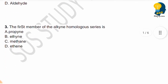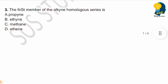Next question: The first member of the alkyne homologous series is — options are propyne, ethane, methane, or ethene. Identify the first member of the alkyne homologous series.